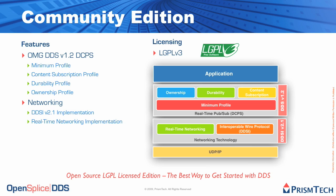In terms of features, what are you going to find in the downloadable open source version? Well, a lot. As you can see from this slide, you are going to find the full DCPS implementation, including the Minimum Profile, Content Subscription, Durability and Ownership, along with our Real-Time Networking Technology and the Interoperable Wire Protocols — the DDSI, also known as RTPS. The Community Edition is licensed through LGPLv3 licensing terms.